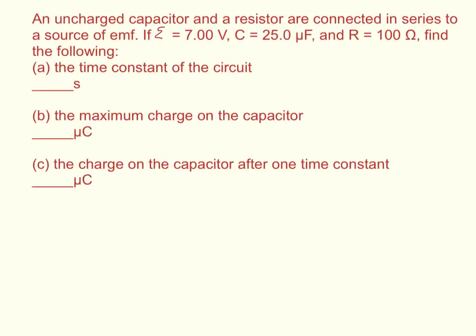An uncharged capacitor and resistor are connected in series to a source of EMF. If E equals 7 volts, C equals 25 microfarads, and R equals 100 ohms, find the following: the time constant of the circuit, the maximum charge on the capacitor, and the charge on the capacitor after one time constant.